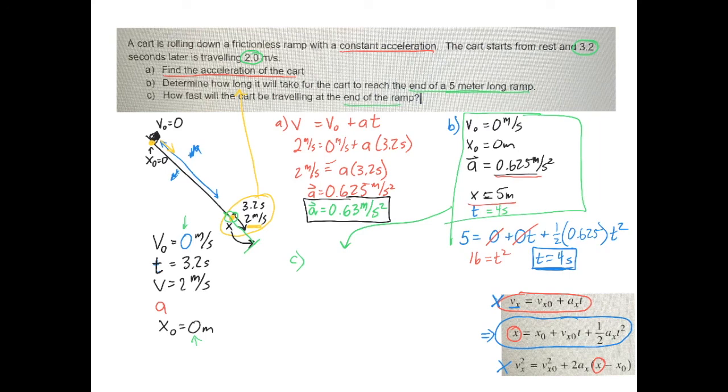So all we need is to find the final velocity. Again, you can use whichever form you want. I'm going to go ahead and use this first guy just because it tends to look the easiest. So I'm going to go final velocity is equal to the initial velocity, which was 0 meters per second, plus the acceleration, which is 0.625 meters per second squared, times the time, which we just found was 4 seconds. Now, if we take the 4 and we multiply by 0.625, we get our final answer, which is velocity equals 2.5 meters per second.